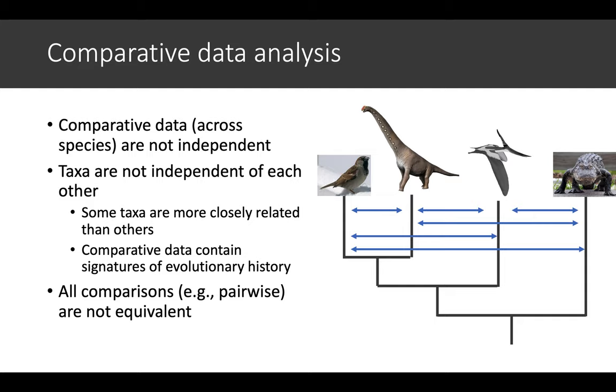The way that these taxa are not independent of each other is that some of the taxa are more closely related than others. For instance, in this example, the sparrow and the sauropod are more closely related to each other than they are to pterosaurs or crocodiles.